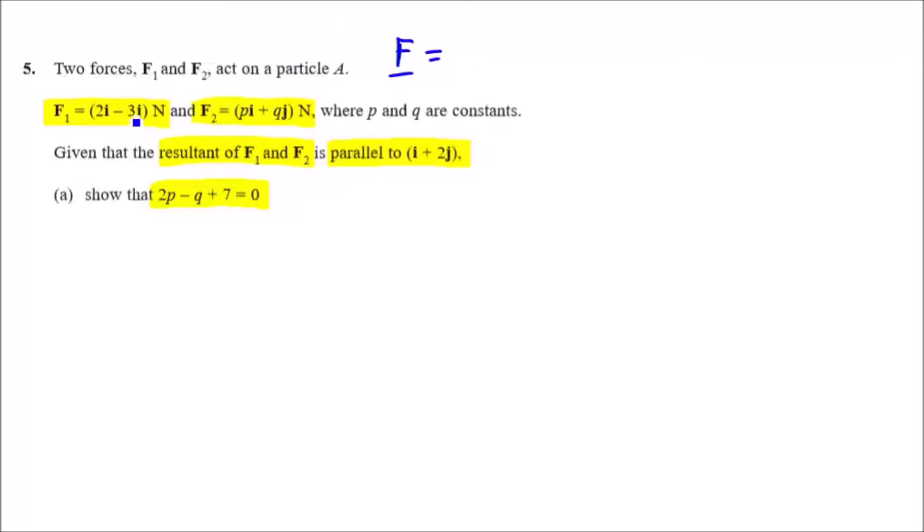In terms of i's, 2 plus p would be (2 plus p)i, and the j vectors would be minus 3 plus q, so minus 3 plus qj. Easy.